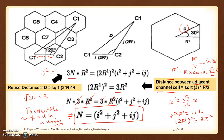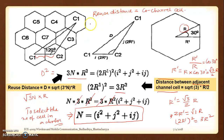We have learned two very important things. One is the reuse distance — please make sure that the reuse distance is the distance between co-channel cells. The other is the adjacent channel cell distance. Both of these will be very useful when we check the interferences.